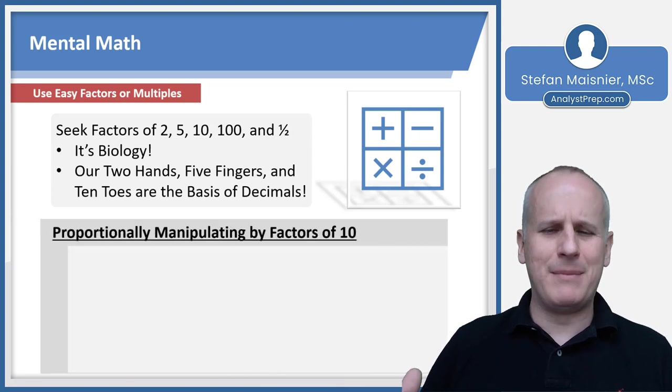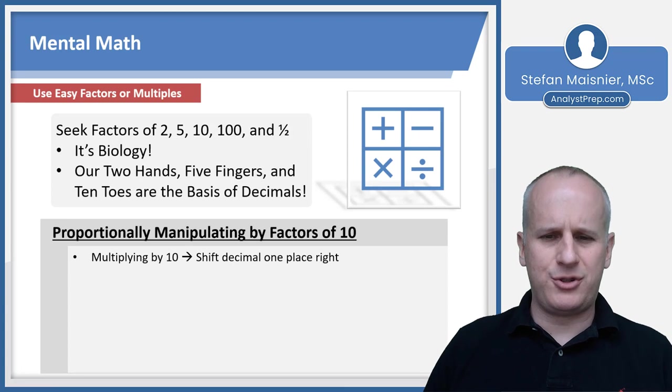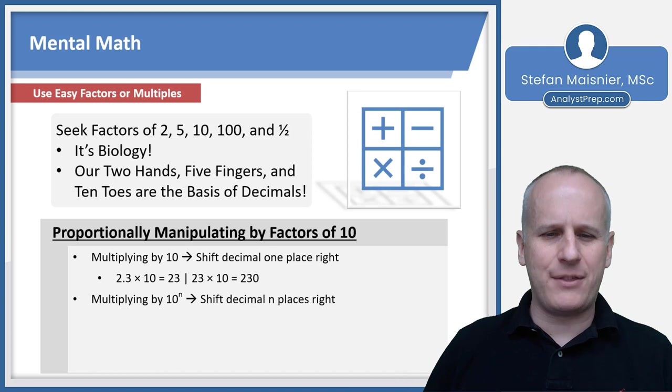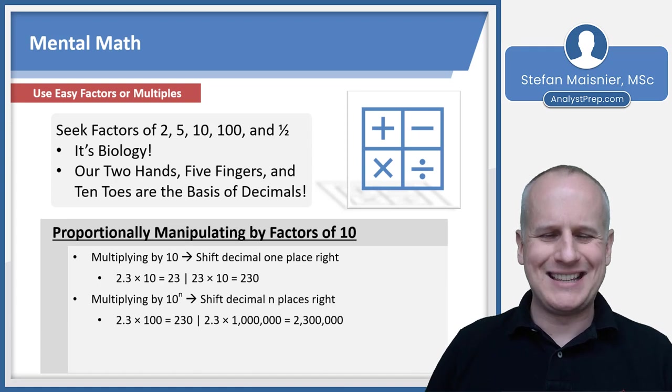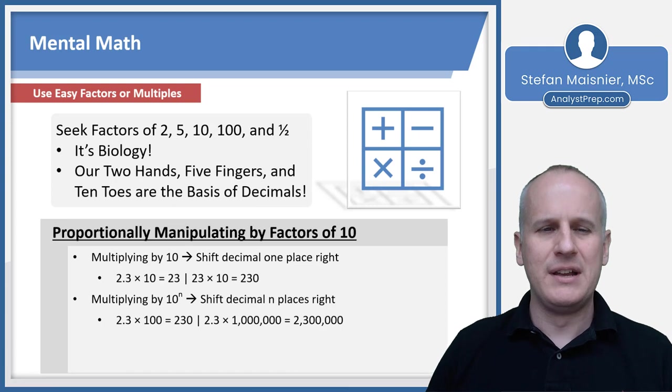So then let's talk about manipulating by factors of 10. If you multiply by 10, you shift the decimal one place right. So for instance, 2.3 times 10 becomes 23, 23 times 10 becomes 230. If you are multiplying by 10 to the nth power, then you just shift the decimal n places to the right. Or if we're looking at 2.3 times 10 to the second or 100, we shift that two places to the right, so that becomes 230. If we did 2.3 times 10 to the sixth or 1 million, that would be shifting six places to the right, and you go from 2.3 to 2,300,000.